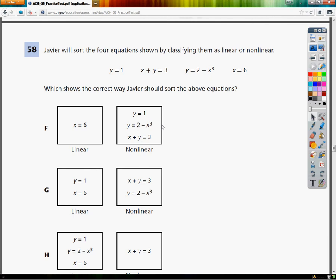Javier will sort the four equations shown by classifying them as linear or nonlinear. y equals 1, x plus y equals 3, y is equal to 2 minus x to the third, and x is equal to 6. Which shows the correct way Javier should sort the above equations?